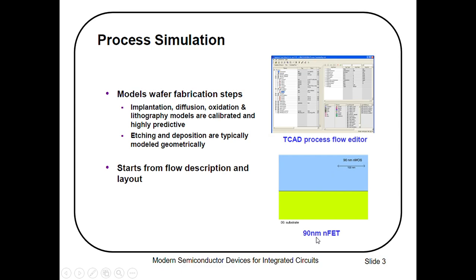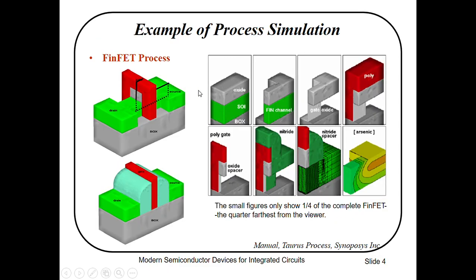Here you can see this 90 nanometer NFET. Here is an example of process simulations. We have this 3D FinFET structure and here you can see the cross-sectional view. These are the FinFET process simulations — these small figures show only one quarter of a complete FinFET. Here we have the oxide, silicon oxide box, the fin channel, gate oxide, poly, poly gate and oxide spacer, nitride spacer, and arsenic. This gives us an idea of what is going to happen in the fabrication.